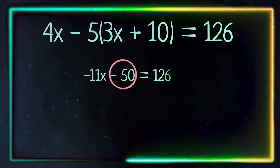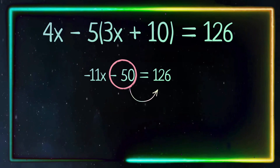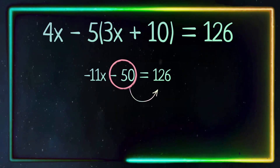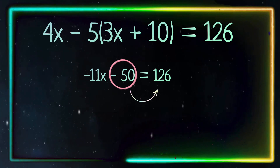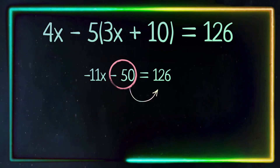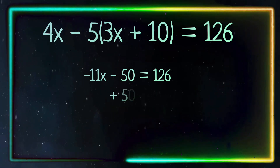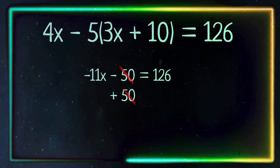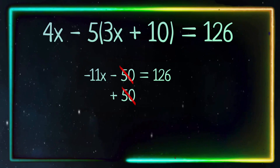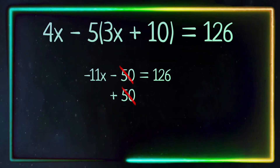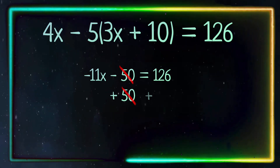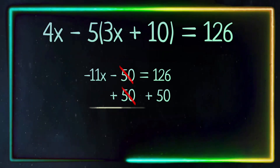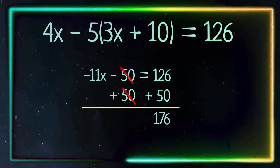To the other side of the equation so we can get the x term by itself. To cancel out the negative 50 on this side, we use its inverse, which is positive 50, and that gives us zero. But remember, what we do to this side we also have to do to the other side, so we will add 50 to 126, and that equals 176.